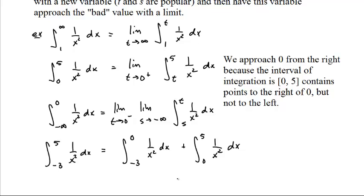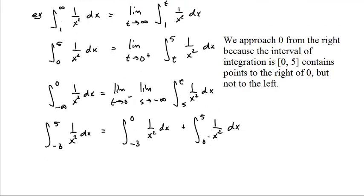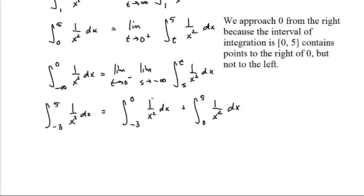First thing you do is you split it up at the bad point. This integral from negative 3 up to 5 is negative 3 up to 0 plus from 0 up to 5 and then each of these is an improper integral with a problem at one end. The first one we approach 0 from the left. You call it t, replace 0 with t and approach it from the left. Over here you replace 0 with some s and you approach s from the right.